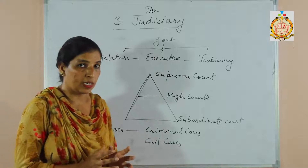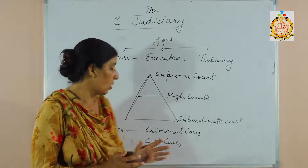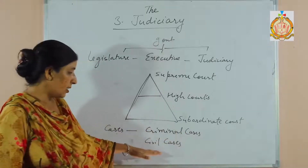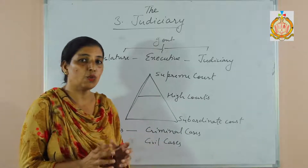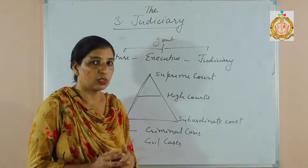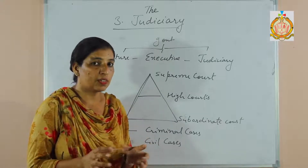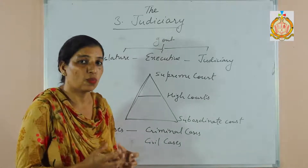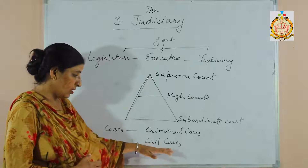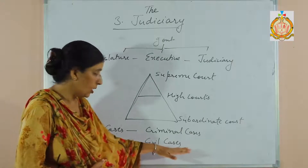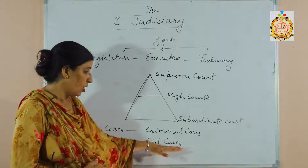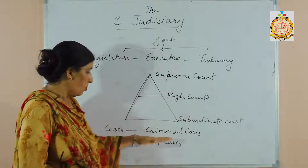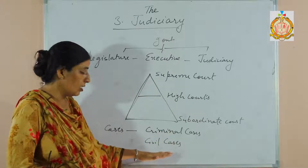Under criminal cases, cases related to robbery, dacoity, murder — all these types of cases come under the criminal category. Under civil cases, we can say cases related to family matters like divorce, minor disputes between family members, disputes related to contracts, damage of goods — such types of cases related to family matters come under the category of civil cases. So two types of cases can be brought to the courts: criminal and civil.